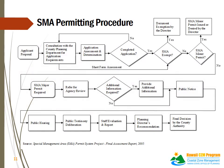The SMA permitting procedure diagram shows the process in the review of SMA permits. The county planning departments are charged with assessing SMA permit applications. The county planning department directors make their determinations on SMA exemptions and SMA minor permits. They provide recommendations on SMA major permits to the county authorities, which are the respective county planning commissions, or the City Council for the City and County of Honolulu. Final decision-making power in SMA major permit decisions is vested in the respective county authorities. A public hearing is required for an SMA major permit.